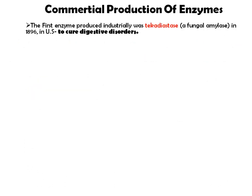For commercial production of enzymes, the first enzyme produced industrially was Takadiastase in 1896 in the USA, to cure digestive disorders. Takadiastase is a fungal amylase.